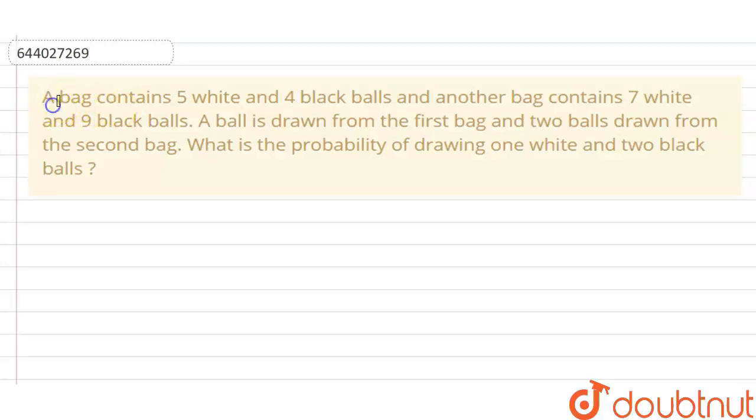The question is: a bag contains 5 white and 4 black balls. Another bag contains 7 white and 9 black balls. A ball is drawn from the first bag, 2 balls drawn from the second bag. What is the probability of drawing 1 white and 2 black balls?